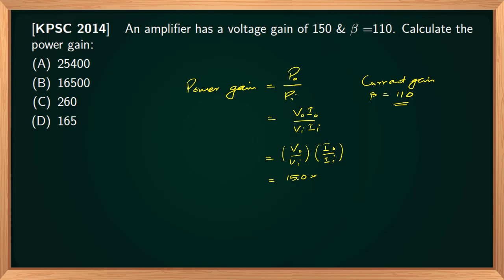Therefore, this is 150 into beta, 150 into 110. Answer is 16,500. So the correct option is Option B.